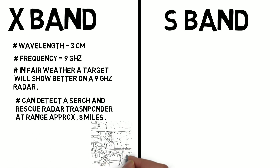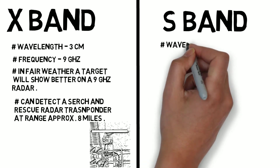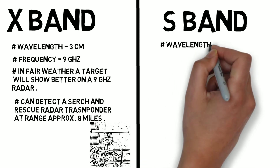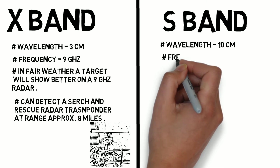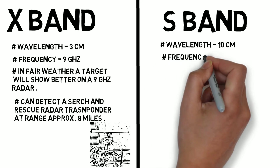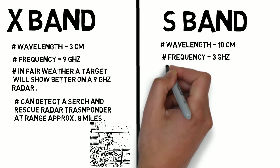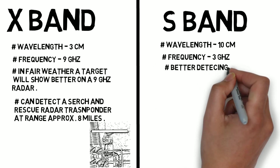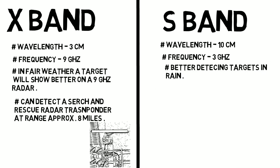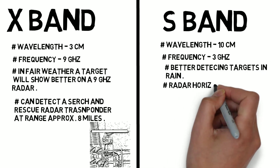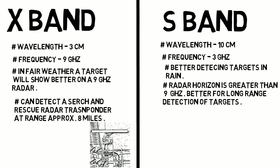Now let us see the S-band radar. The S-band radar wavelength is 10 centimeters and its frequency is 3 gigahertz. The S-band is better at detecting targets in rain, has a greater radar horizon than the X-band, and is better for long-range detection of targets.